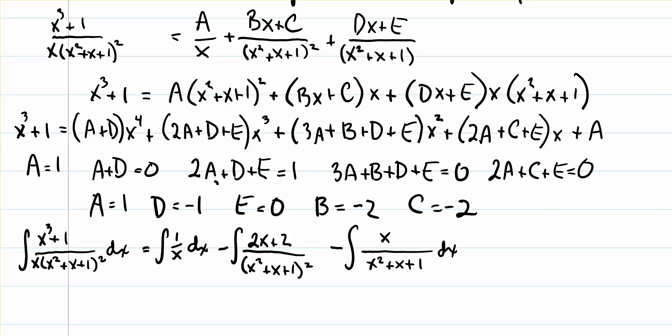On first pass through this, we have the integral of 1 over x dx. Then, since B and C are both negative, I factored out the negative and end up with negative integral of 2x plus 2 over the quantity x squared plus x plus 1 squared. And since D is negative 1, I factored out that negative and have negative integral of x over x squared plus x plus 1 dx. Only the very first integral is trivial; the other two we're going to split each into two further integrals.